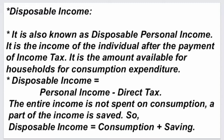The entire income is not spent on consumption. A part of the income is saved. So, Disposable Income is equal to Consumption plus Saving.